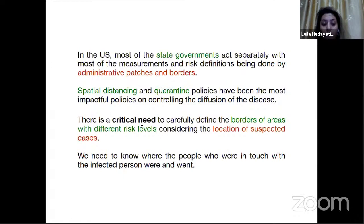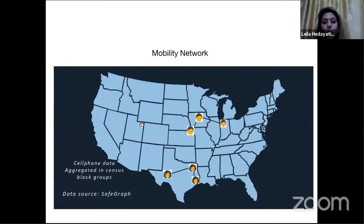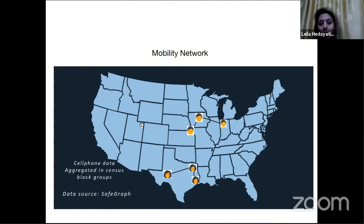We need to know where the people who were in touch with an infected person were and went. For this purpose, we use anonymized mobility data collected with safeguards from cell phones, and created networks in which locations are connected to each other based on the movement of individuals between those locations. We created weekly networks for all around the US.